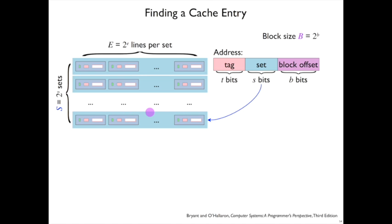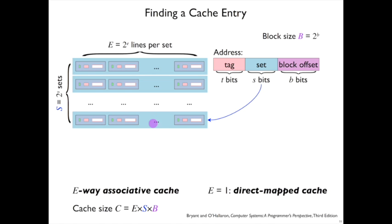At this point, it may be few enough that it's cheap enough to make hardware to look for this tag in parallel in all the particular lines within a set. And the amount of parallelism, the amount of searching it has to do within a set, is called the associativity.